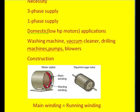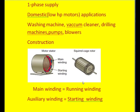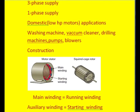The main winding is a thick wire, large number of turns, contributes low resistance, high inductance. Coming to the starting winding, it is a thin wire with less number of turns, contributes high resistance, low inductance. And coming to the rotor, it is a squirrel cage rotor.